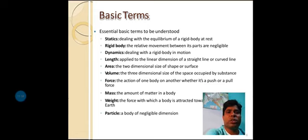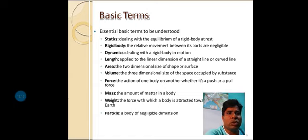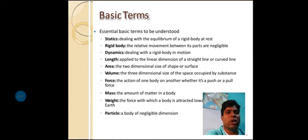Length is applied to the linear dimension — it is required for straight-line or curved-line measurements. Area refers to the surface area calculation, which you already know. Volume is the three-dimensional size of space occupied by a substance — combining the x-axis, y-axis, and z-axis directions gives us volume.